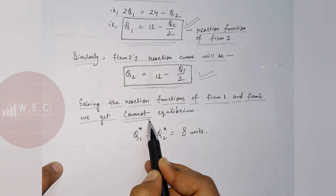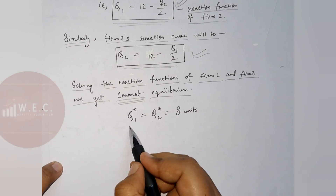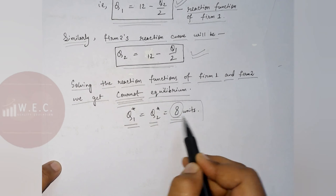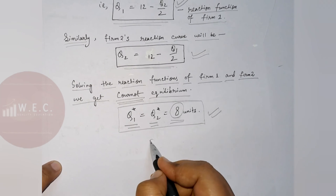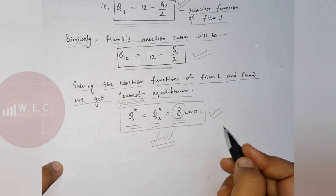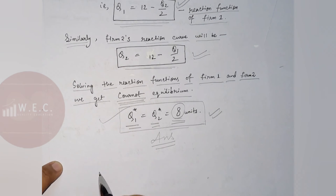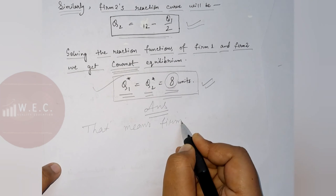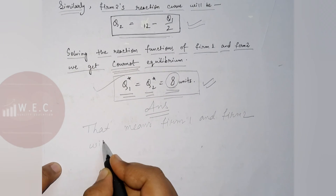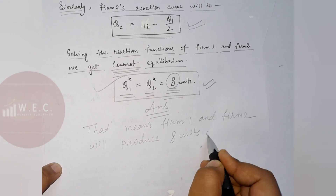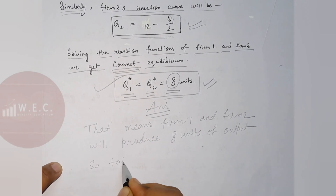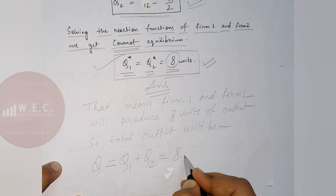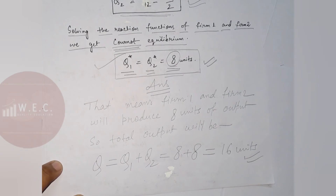The Cournot equilibrium is Q1 star equals Q2 star equals 8 units. Firm 1 will produce 8 units and Firm 2 will produce 8 units as well. The total industry output Q equals Q1 plus Q2, that is 8 plus 8 equals 16 units.